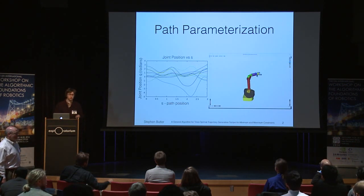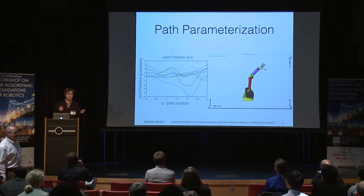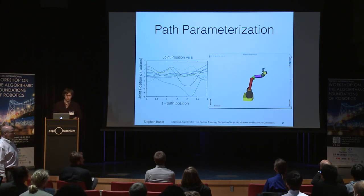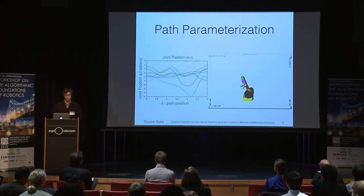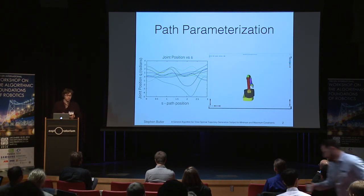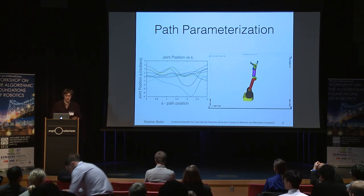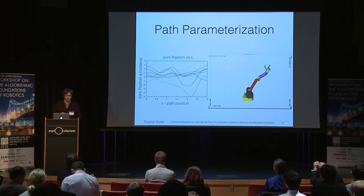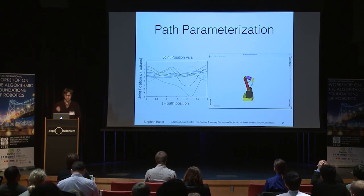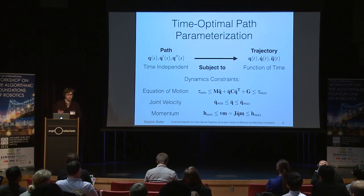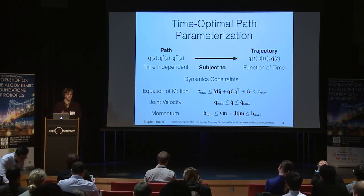Good morning, everyone. My work really sits at the crossroads between path planning and control. We often have a path that we'd like our robot to follow. As you can see in the plot on the left, we have the joint positions of the robot, parameterized as smooth functions of S, some scalar value. What we'd like to do is turn that into a trajectory that the controller of a robot can follow. A path is time independent, and we'd like to generate a trajectory, which is a function of time.